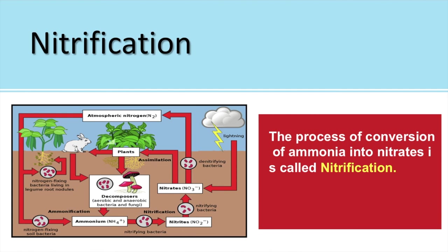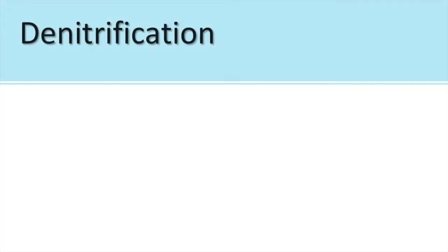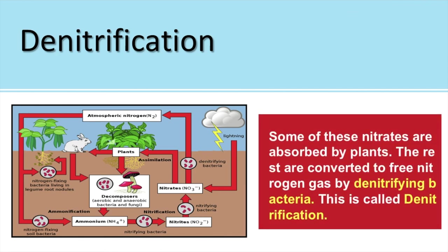The final step is denitrification. Some of the nitrates present in the soil are absorbed by plants; the rest are converted to free nitrogen gas by denitrifying bacteria. Just as nitrification takes place by nitrifying bacteria, denitrification takes place by denitrifying bacteria. This process is called denitrification, and with this, all five steps of the nitrogen cycle are complete.